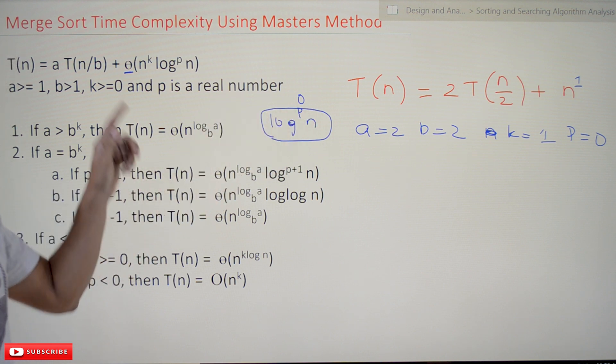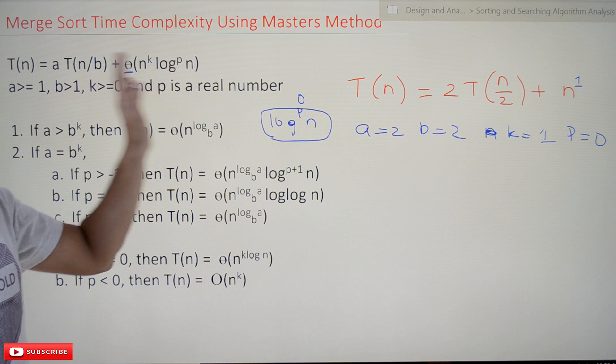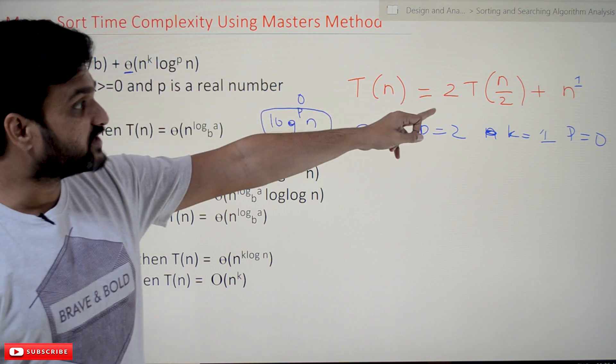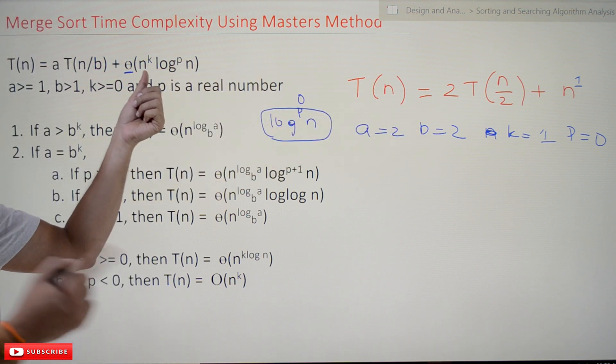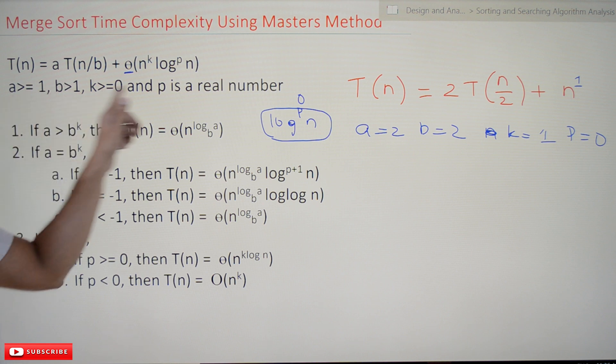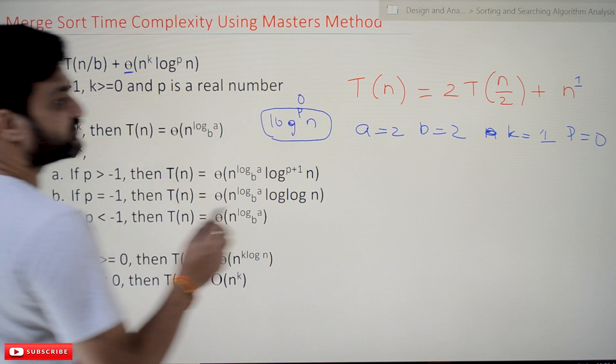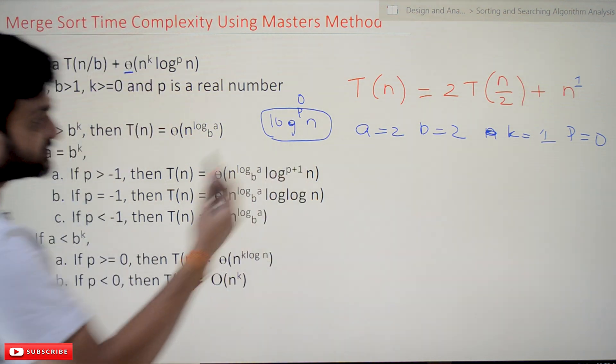Now we have to check for these conditions. Is the equation in this form? Yes, it is in that form. Next we have to check for these conditions: is a greater than or equal to 1? Yes, a is equal to 2, so it is greater than or equal to 1.